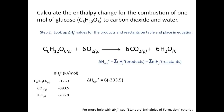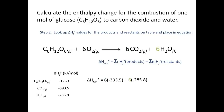On the product side, we start with CO₂, which has a ΔHf° of −393.5 kJ/mol. We multiply this by 6, since the coefficient in front of CO₂ in the balanced equation is 6. We also have 6 moles of liquid water, so we multiply 6 by the ΔHf° of liquid water, which is −285.8 kJ/mol.